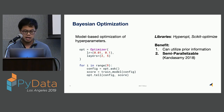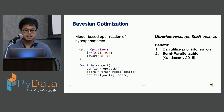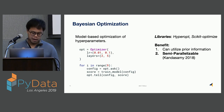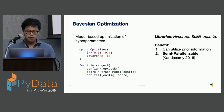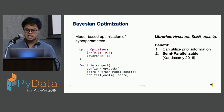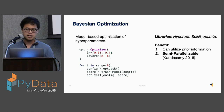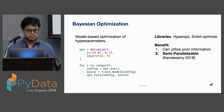One thing to note is that Bayesian optimization is an inherently sequential process — the benefit of using prior information depends on having those prior trials. You can parallelize it with recent research by sampling multiple points at once, but the benefit of parallelization decreases significantly as you add more workers.